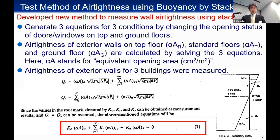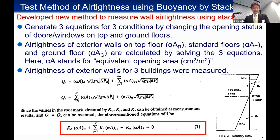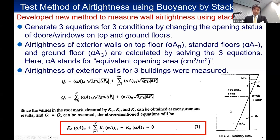We also report measurement results for outdoor air volumes entering through entrance doors and resulting heating loads in a high-rise building in winter, considering the large impact of stack effect. First, I'm going to talk about the simple test method of air tightness using buoyancy caused by the stack effect in high-rise buildings. The right-hand side of this slide shows the schematic of vertical pressure difference distribution between the inside and outside of a building in winter.